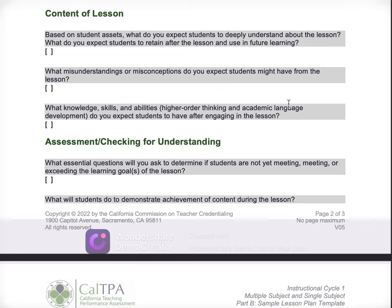What knowledge, skills, abilities, higher order thinking, and academic language development do you expect students to have after engaging in the lesson? If you started with a lower order thinking learning goal, you're not going to be able to answer this question. This is just the first question of many that's going to ask you about higher order thinking. So beginning with a strong learning objective grounded in higher order thinking lets you answer this question and really dig in — what do you want them to be able to know at a deep level?